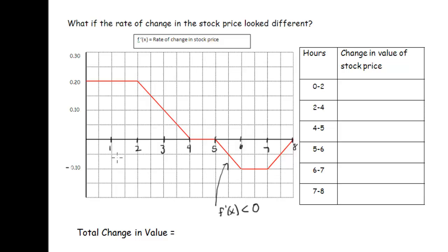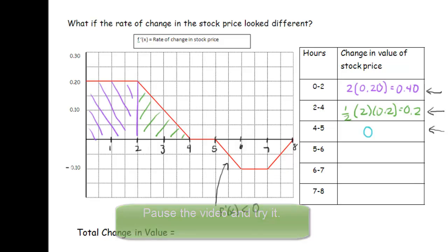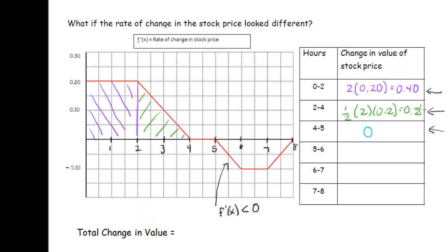Take a minute to figure out the first three values, then unpause the video and we'll do the last three together. For the first shape, area equals base times height: 2 times 0.2, which is 0.4 — so the change in value over the first two hours is $0.40. The second shape is triangular: one half times base times height gives one half times 2 times 0.2, which equals 0.2. Between hours 4 and 5 the rate of change is zero, so there's no change in stock price.